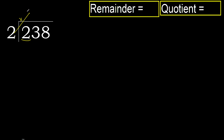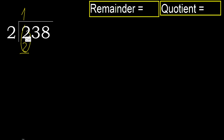2 multiplied by 2 is 4. 4 is greater. 2 multiplied by 1 is 2. It is not greater. Subtract. 0. Next. Eliminate 0 on this side. 3.